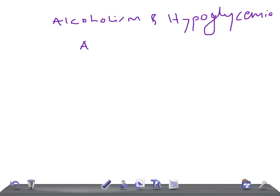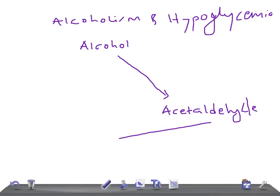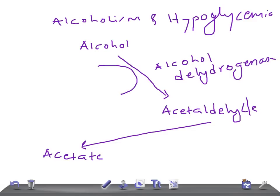Let me draw the pathway of metabolism of alcohol. Alcohol is converted to acetaldehyde. During the conversion of alcohol to acetaldehyde, there is an enzyme known as alcohol dehydrogenase. During this process, NAD is converted to NADH, very important, try to concentrate here.